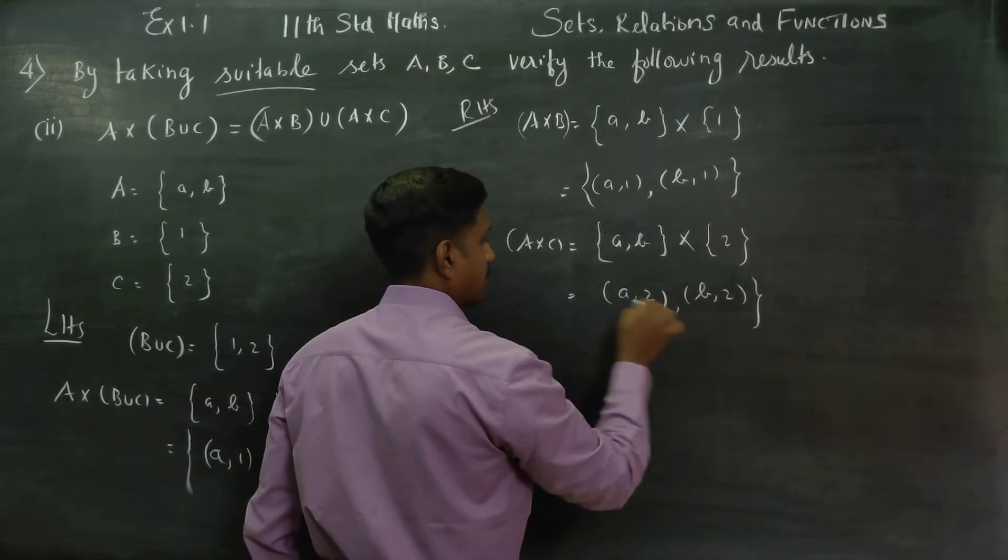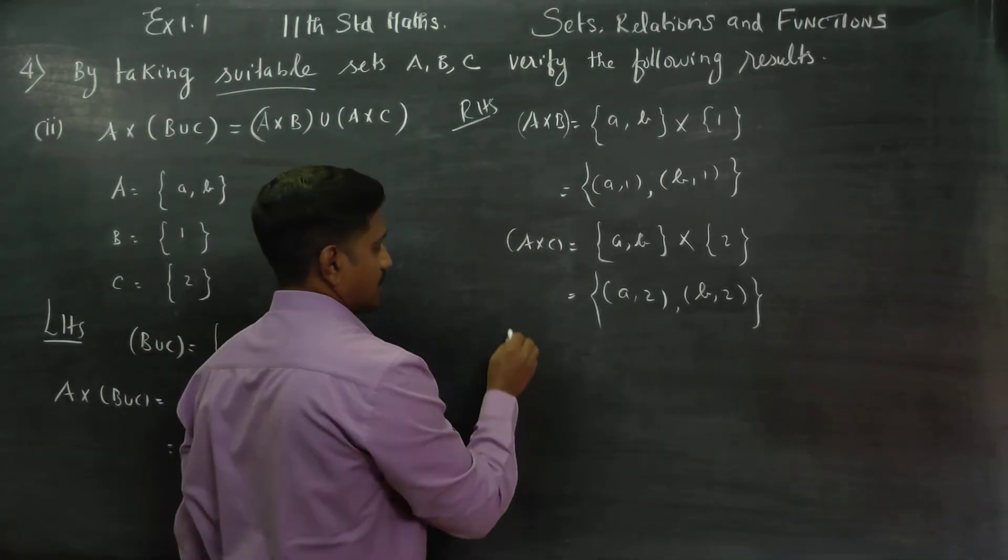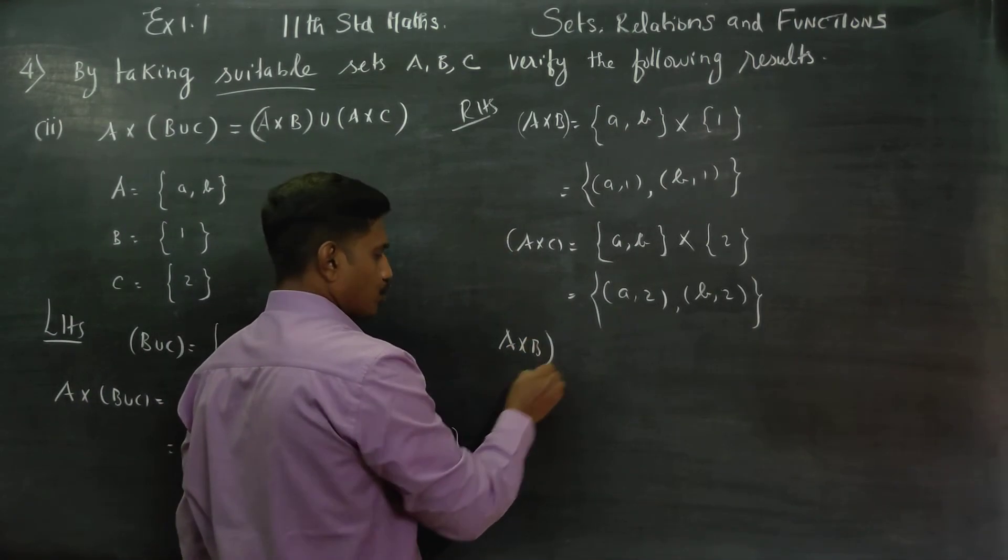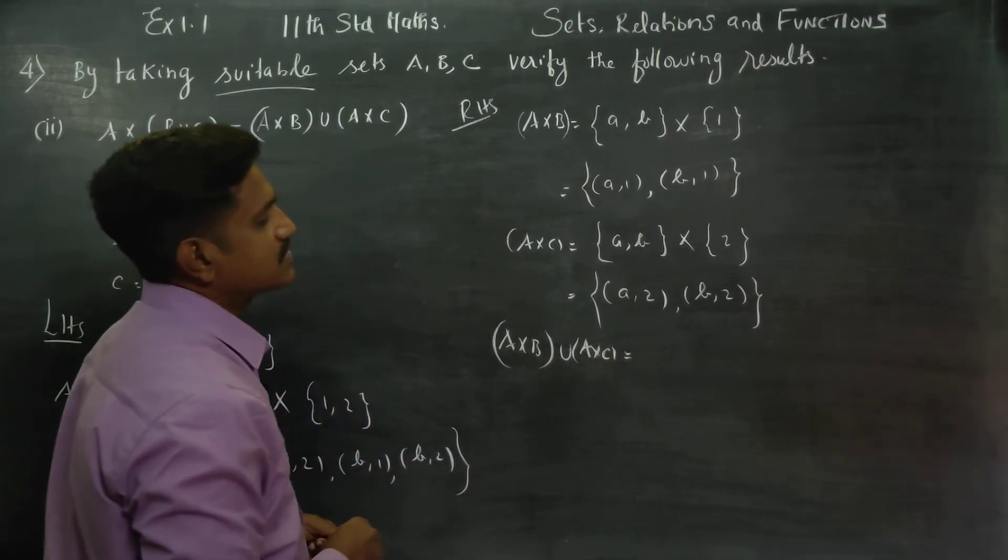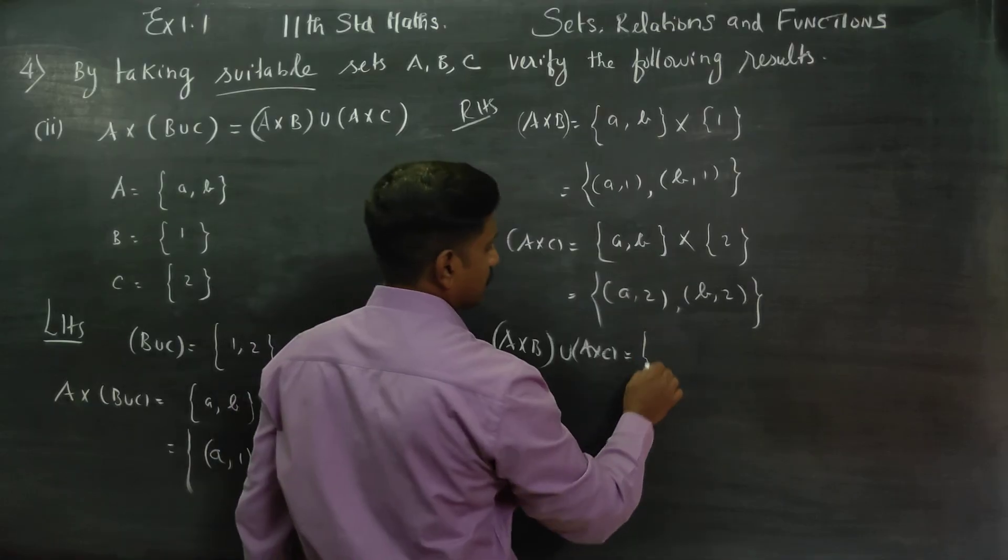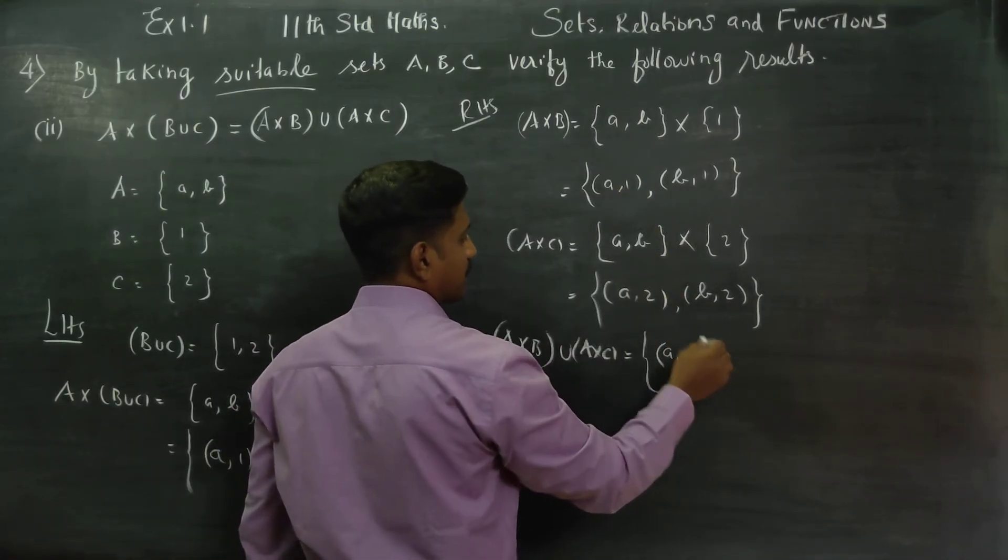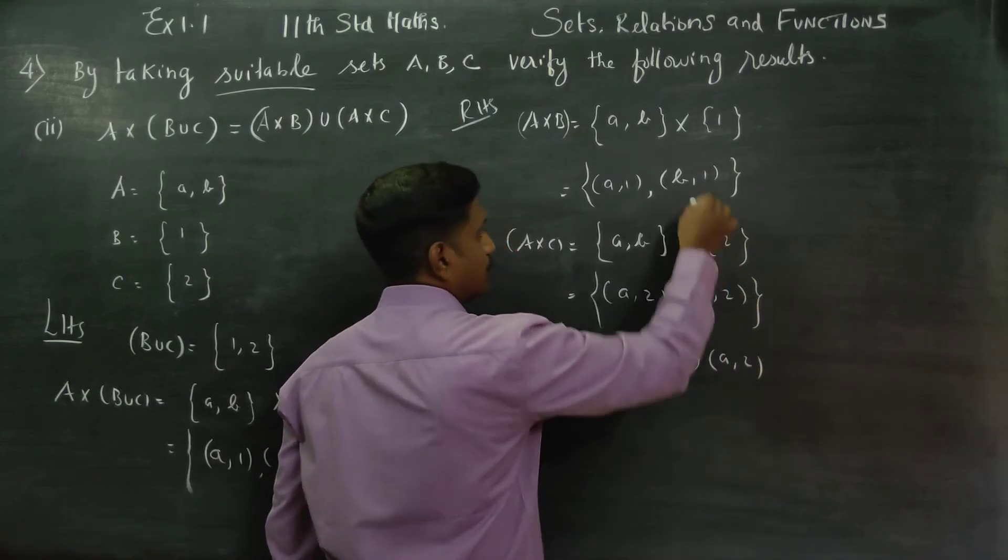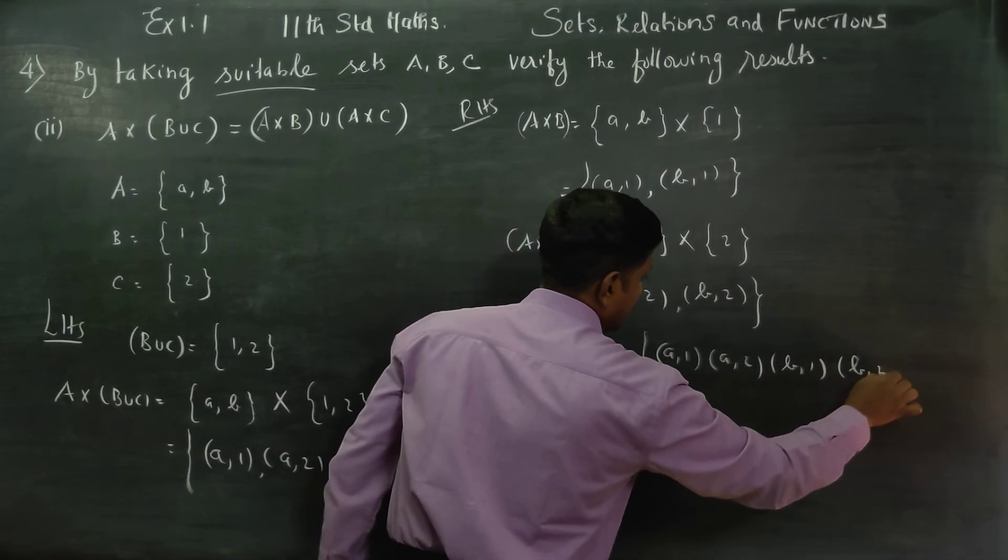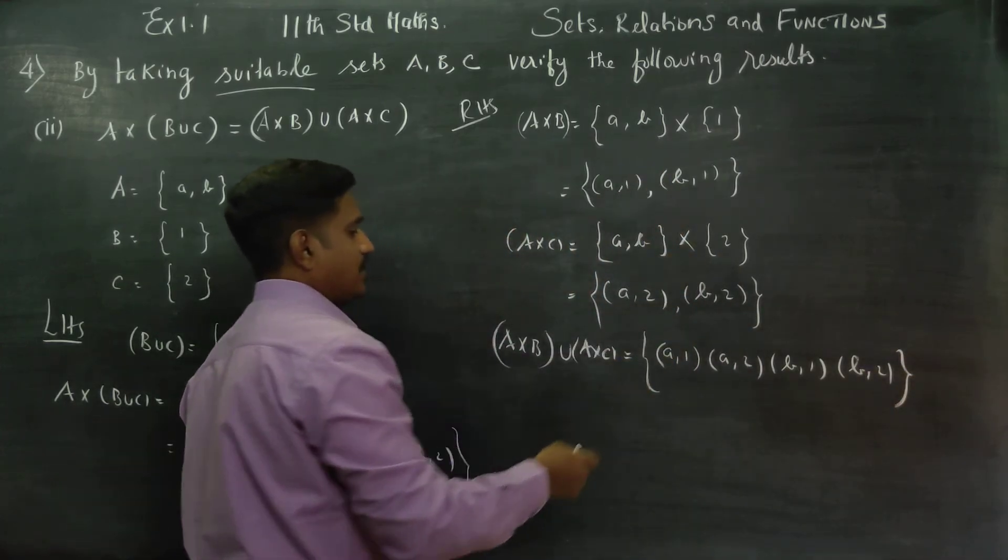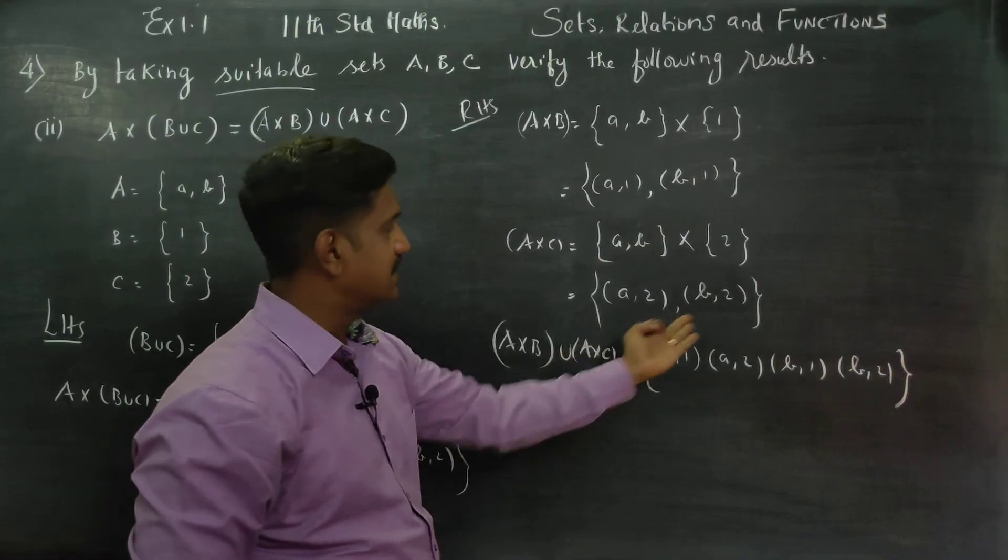Then I want the union of these two sets, A cross B as well as A cross C. You have to find the union. Union means you have to club this, you have to include all the elements of A cross B as well as A cross C.